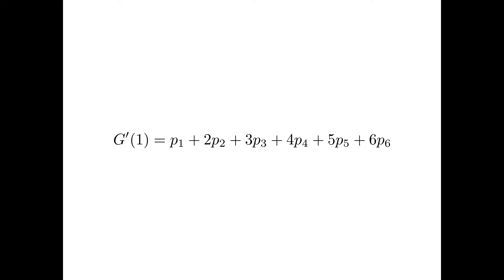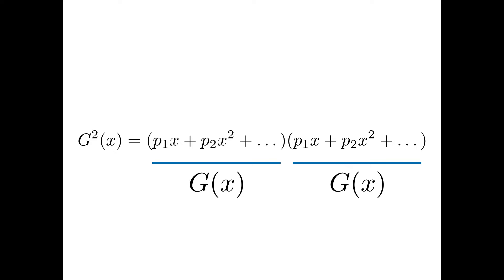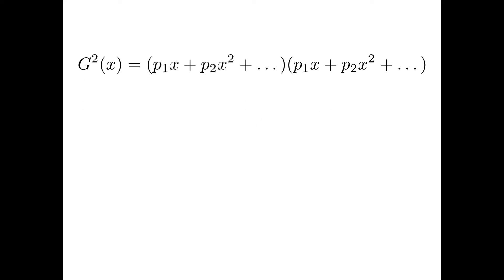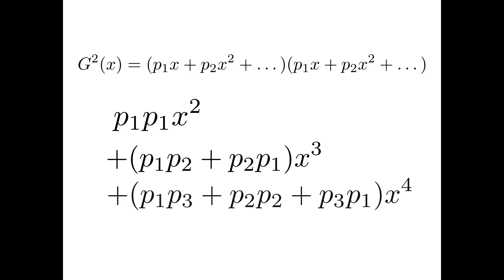Another really cool thing happens when you multiply generating functions. Okay, see what happens if we square our generating function here. The lowest power of x will be 2 and you'll get p1 squared as its coefficient, right? And let's just write a few more terms. Again, just pause the video and just look at these terms. Do you see any patterns?